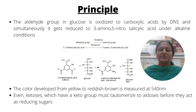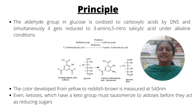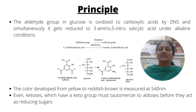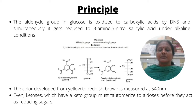The principle behind this experiment is that the aldehyde group in glucose is oxidized to carboxylic acids by DNS, and simultaneously DNS gets reduced to 3-amino 5-nitrosalicylic acid under alkaline conditions. The color developed, from yellow to reddish brown, is measured at 540 nanometers. Even ketoses, which have a keto group, must tautomerize to aldoses before they act as reducing sugars.